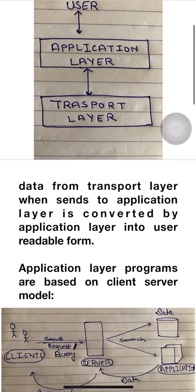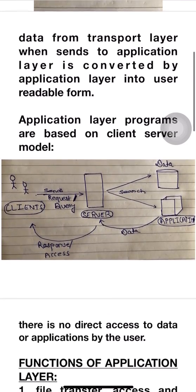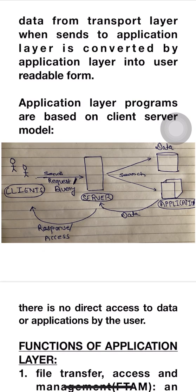Application layer programs are based on the client-server model. As shown in this diagram, a client wants to access some data or application. The client sends a request or query to access that data or application, and the server checks it and responds accordingly.